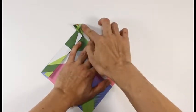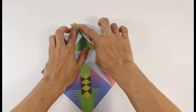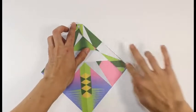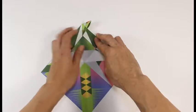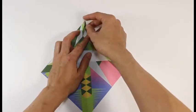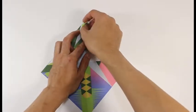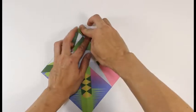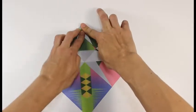We're left with this extra triangular flap of paper. Fold in both directions. Open up and squish fold so all the corners meet.